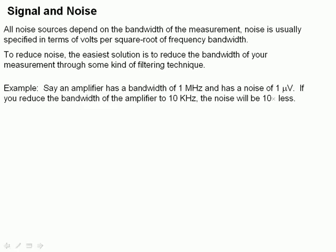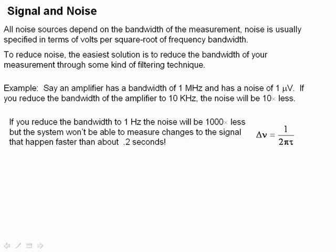Let's look at an example. Let's say we run through an amplifier and we build a simple op-amp circuit and we look at the data sheets for that op-amp and it has a bandwidth of 1 megahertz. If our noise is 1 microvolt and we put some filtering elements in that amplifier and reduce it down to 10 kilohertz, the noise will be 10 times less. Just by reducing the bandwidth of our measurement system, we've reduced our noise by a factor of 10. If we reduce the bandwidth down to 1 hertz from a megahertz, the noise will be 1,000 times less.